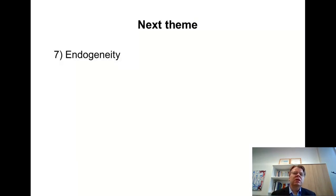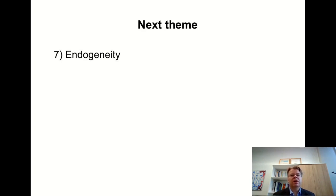We'll continue the course with the next theme regarding endogeneity. Remember that omitted variable bias was one special case of endogeneity. We will next address this endogeneity issue more broadly and get some other examples of endogeneity. Bye-bye.